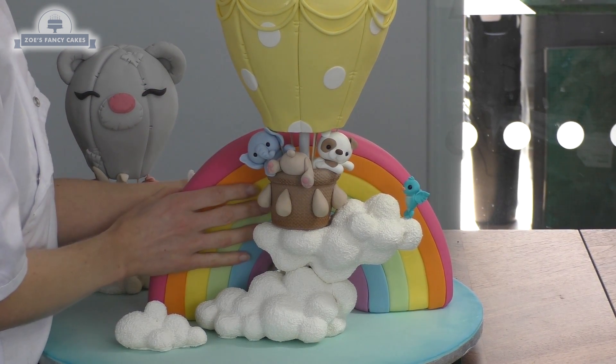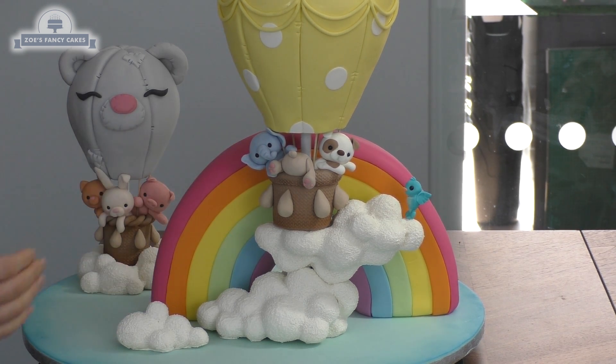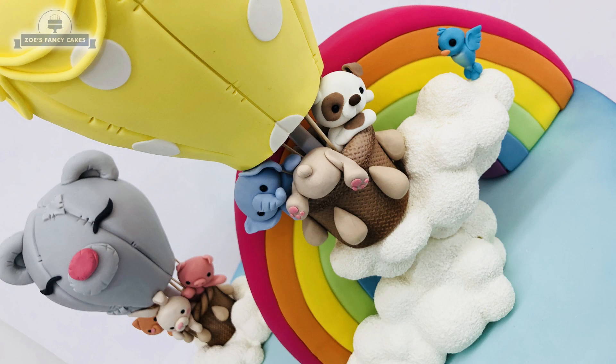So it's a fairly simple cake, but we've managed to get the rainbow to stand up on this one. Of course you can keep it on its own if you prefer not to do the hot air balloons, you can just make some little clouds to go either end. Now I am going to show you how I make the clouds and the hot air balloon in my next YouTube video, so keep your eye out for that one coming soon. I hope you've enjoyed the video, thank you for watching.